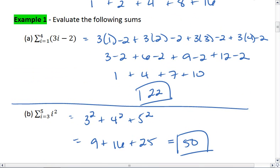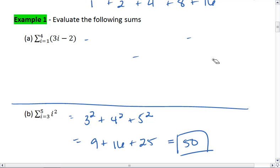For example, in example 1a from above, I could have split this into two different sums. I could have divided this into the summation from i equals 1 to 4 of 3i, minus the summation from i equals 1 to 4 of 2.